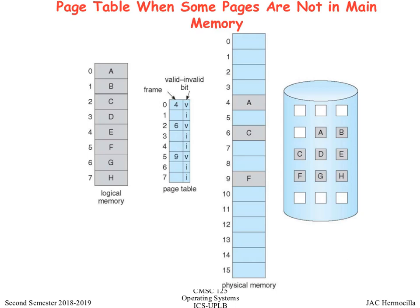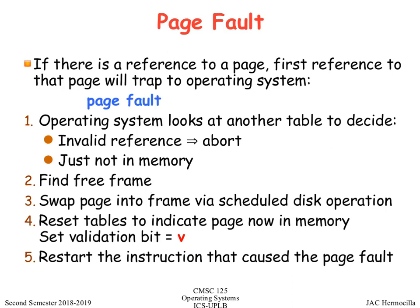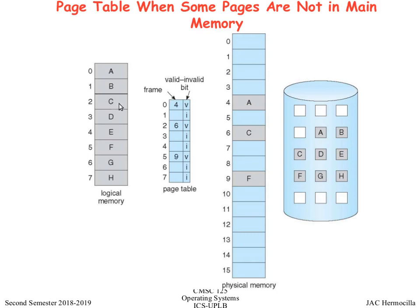A page fault occurs on the first reference to a page not in memory. The OS looks at another table to decide whether the access is invalid (a protection error) or simply the page is not yet in memory. It finds a free frame, swaps the page in, resets the page table to indicate the page is now in main memory, and restarts the instruction that caused the page fault — for example, a 'move ax, [memory location]' instruction.